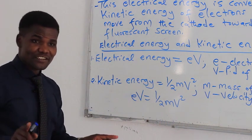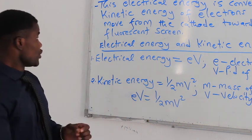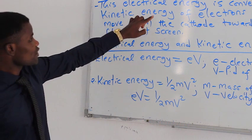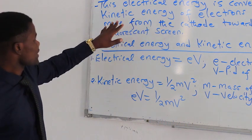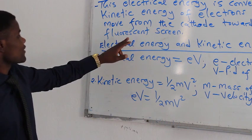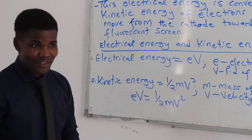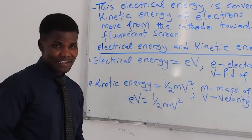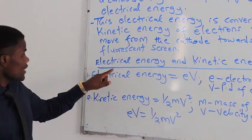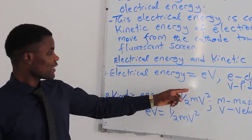You don't destroy energy and you don't create energy — you only change it from one form to another. This electrical energy is converted to kinetic energy of electrons that move from the cathode towards the fluorescent screen. That movement gives the concept of kinetic energy, which is the energy due to the motion of matter.